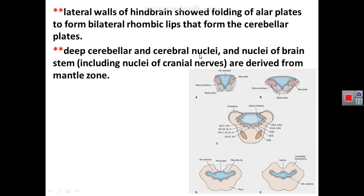Deep nuclei in the cerebrum and deep nuclei of the brain stem — including nuclei of the cranial nerves — are all derived from the mantle zone. The mantle zone forms central and deep nuclei of the brain stem, some contributing to cranial nerve nuclei. In the cerebrum and cerebellum, gray matter nuclei inside the white matter are also derived from the mantle zone, with motor nuclei from basal plates and sensory nuclei from alar plates.